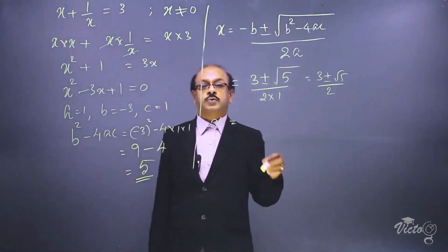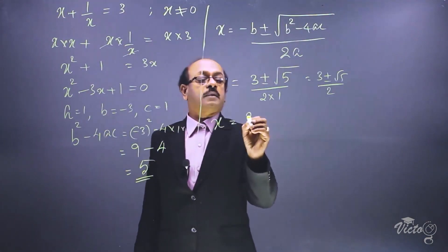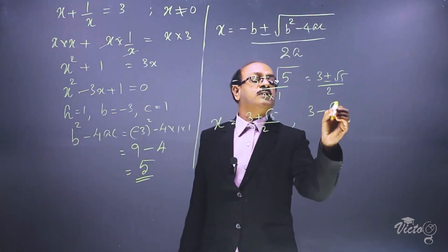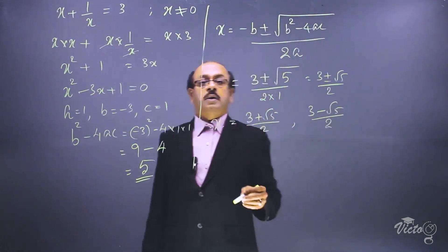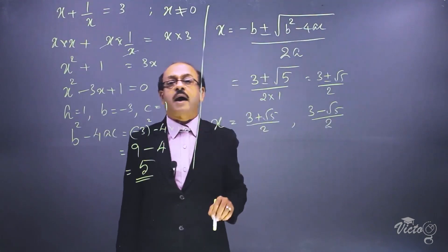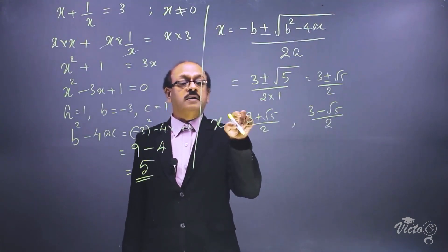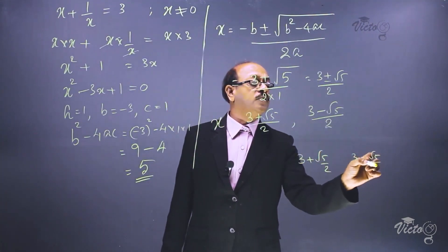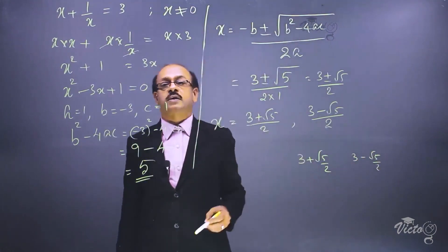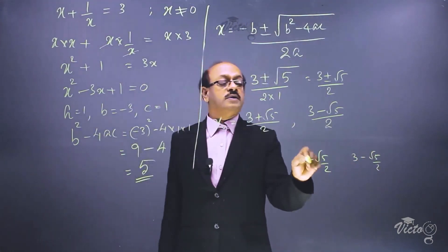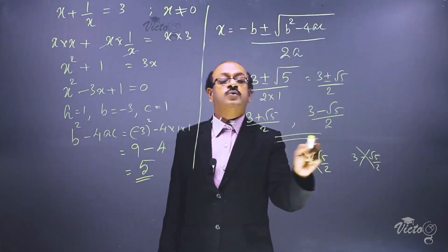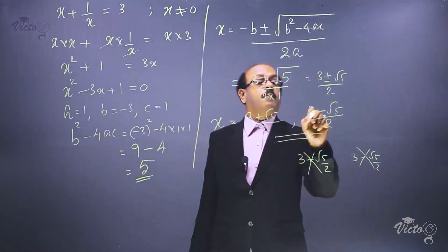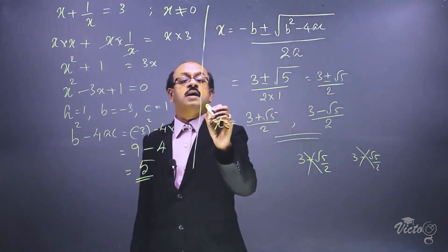We can split this into two solutions: 3 plus root 5 the whole divided by 2, and 3 minus root 5 the whole divided by 2. There is a common error students make — never write the answer as 3 plus root of 5 by 2, treating only root 5 as a fraction. That is wrong. Always write it as 3 plus root 5, the whole divided by 2, and 3 minus root 5, the whole divided by 2. This is the correct solution.